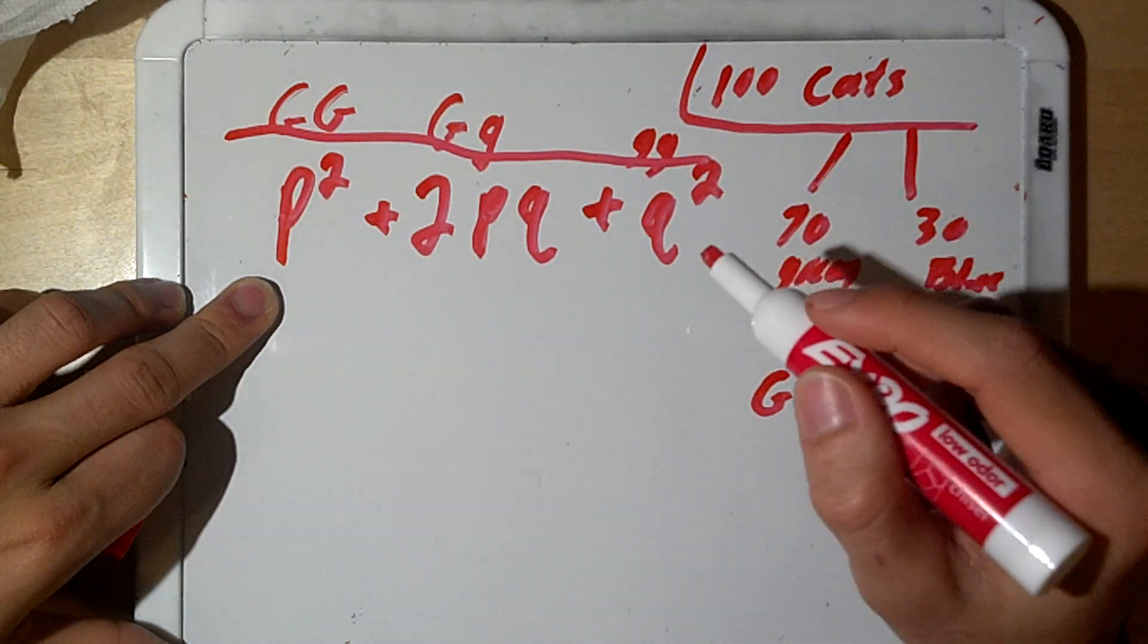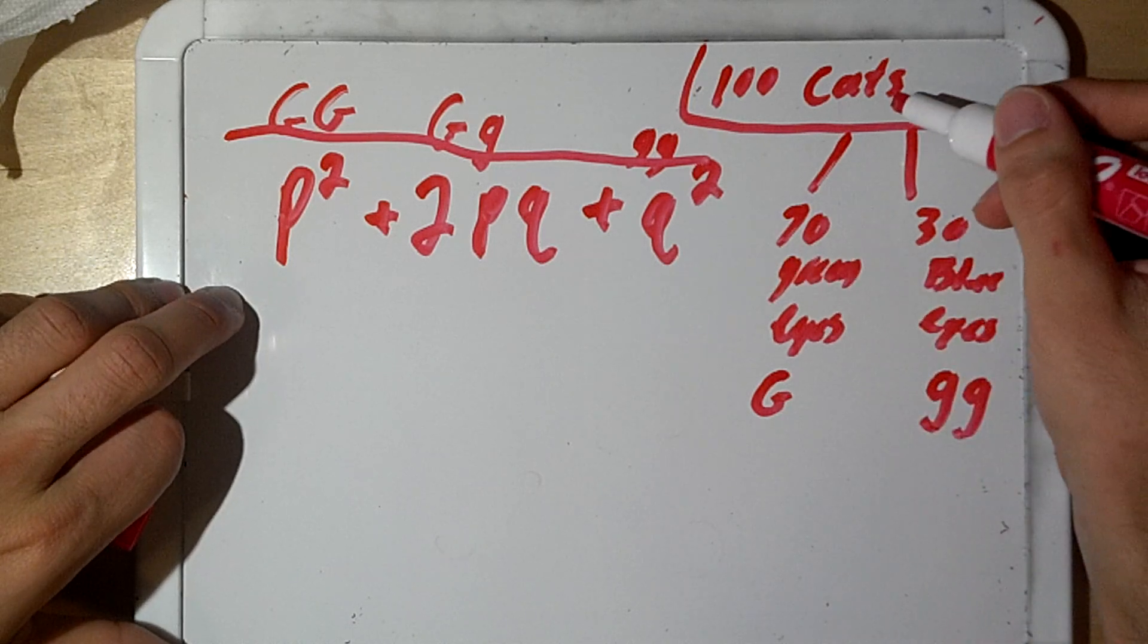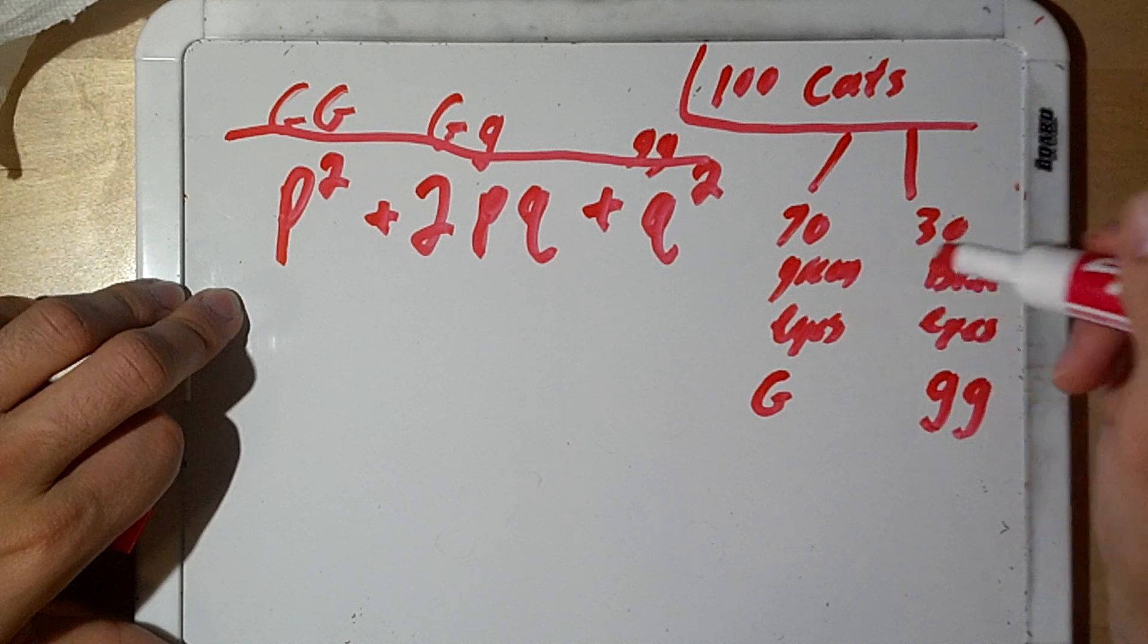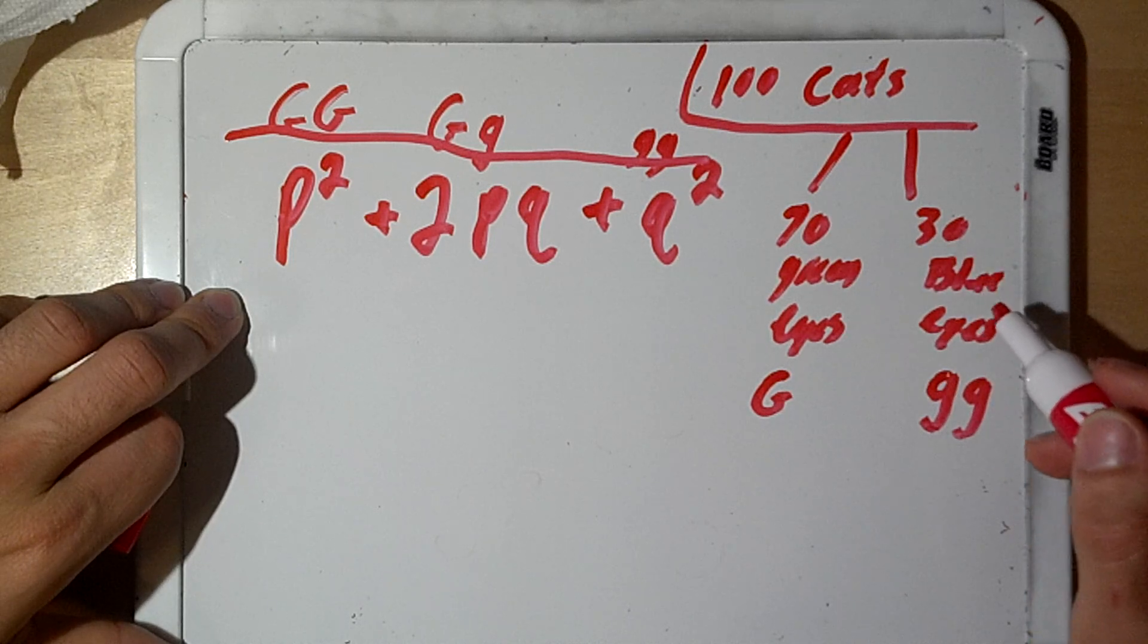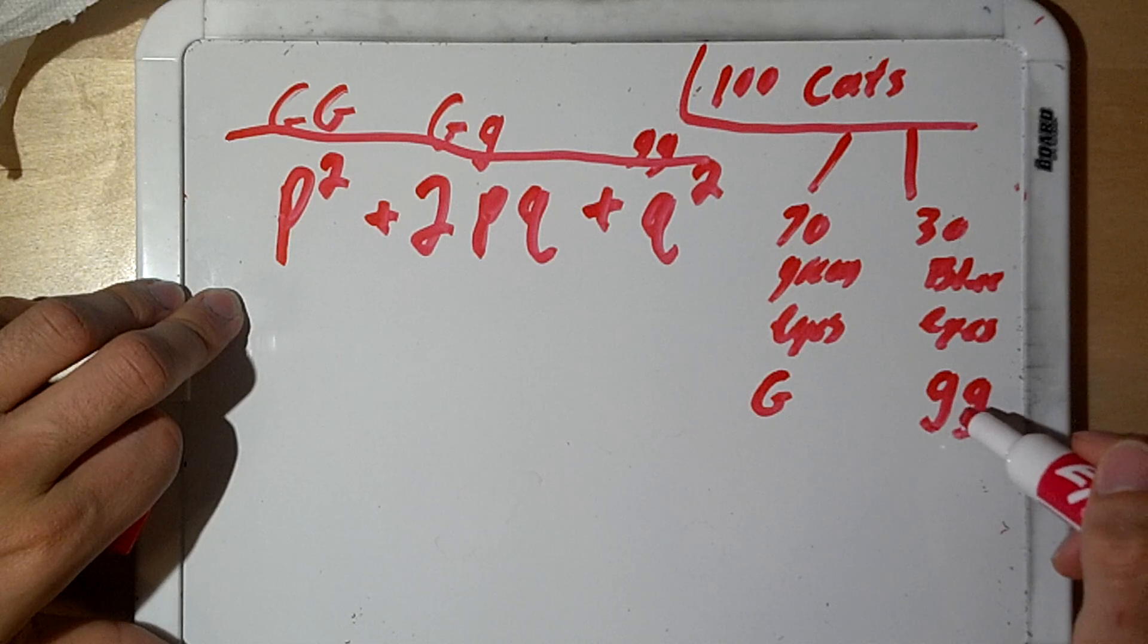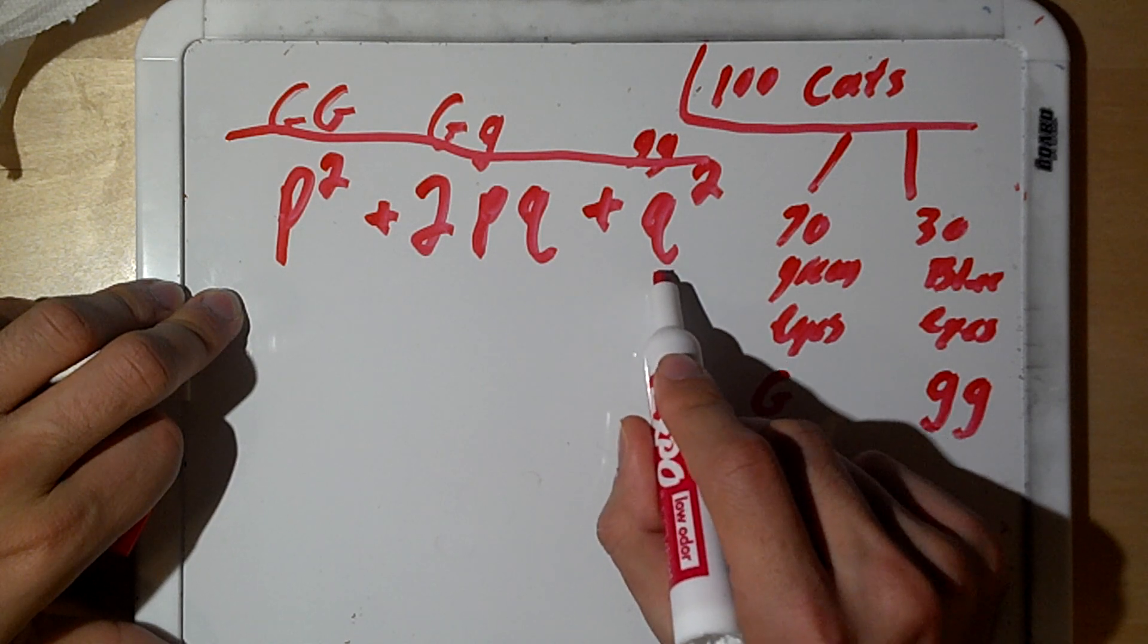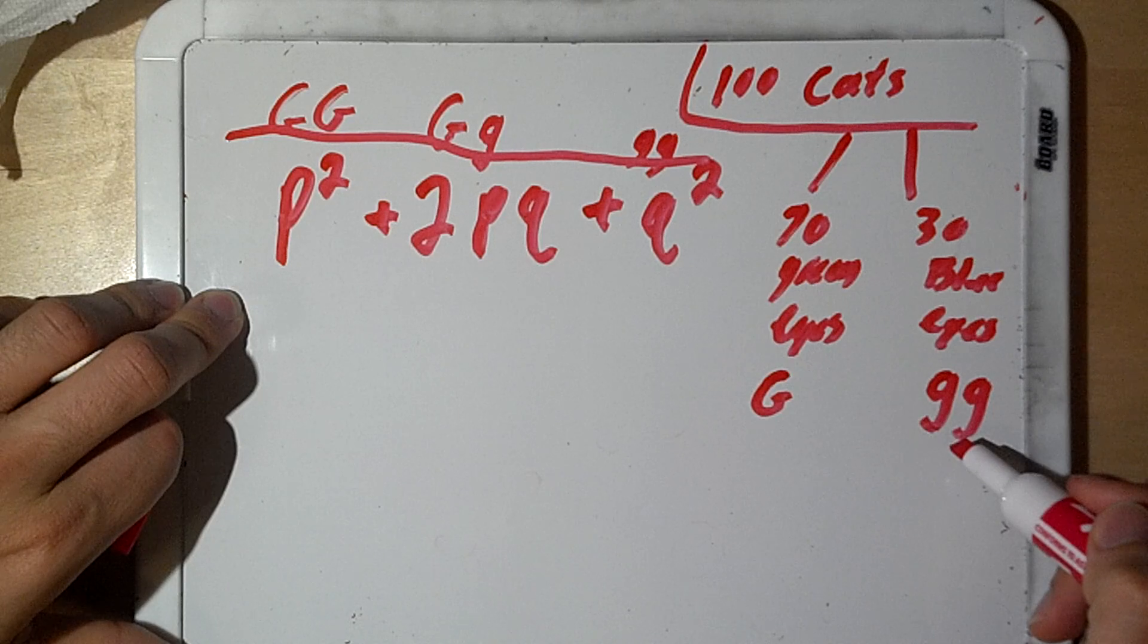So, based on this information, we can calculate the allele frequency within a population. So, back to our example here, we have 100 cats in the population, and we said 70 cats of them have green eyes and 30 of them have blue eyes. And like I said before, because it's recessive, we know these guys are for sure little g, little g. So, when we're finding the allele frequency, I recommend you always start off with q², because that's something that we know 100% for sure.